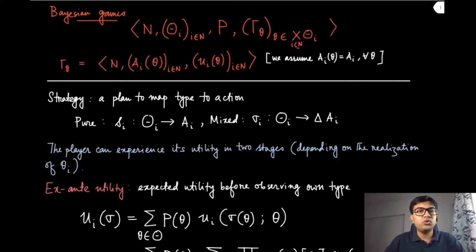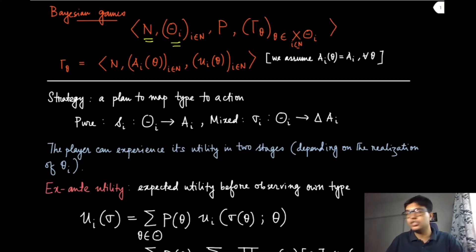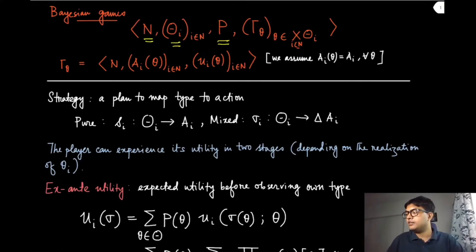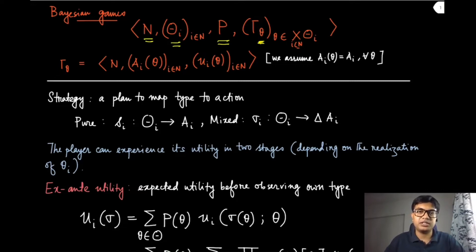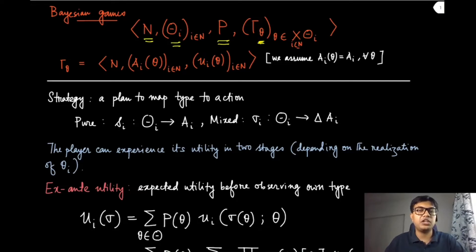From the discussions of the previous module, we know what a Bayesian game is. This is essentially given by a tuple where you have the players, the type sets for each player, a common prior with which the whole type profile is chosen, and for each type profile theta there is a normal form game given by gamma of theta. Now we are going to look at the different strategies in this game, and we will see some examples. Remember that a Bayesian game is a somewhat extension of the normal form game.